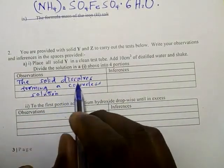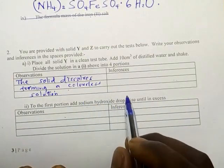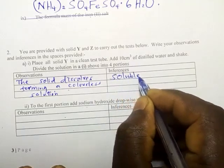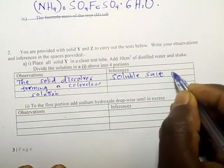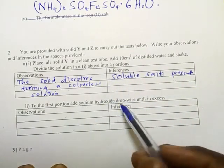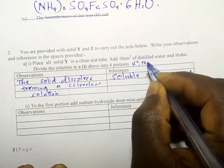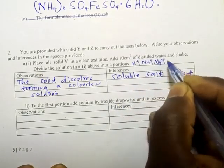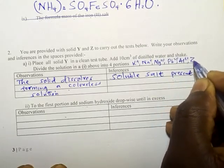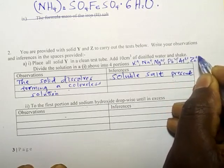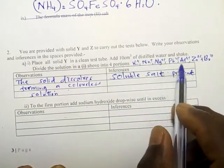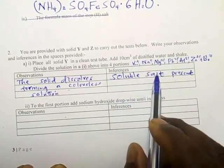If it dissolves to form a colorless solution, it means that the colored ions are absent. But we want to say what is present. What is present is a soluble salt present. Soluble salts are so many of them. We have potassium ions, sodium ions, magnesium ions, zinc ions, and so many others. So instead of listing all of these, you can say a soluble salt present.